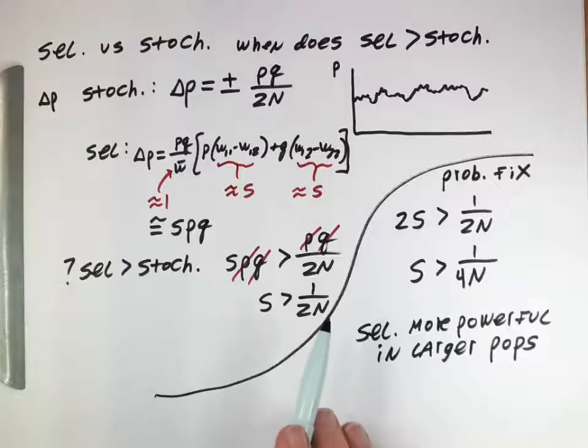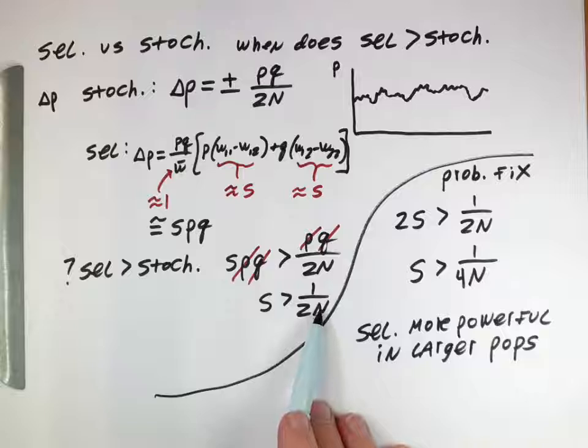On the other hand, for smaller populations, when n is very small, that means the denominator is small, which means the right hand side is larger, which means that s would have to be larger in order for selection to be more powerful than randomness or drift.